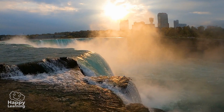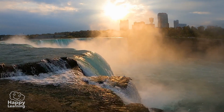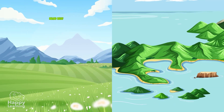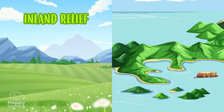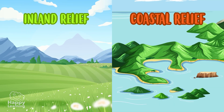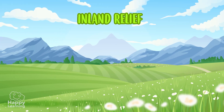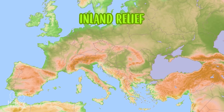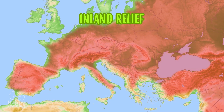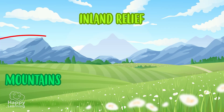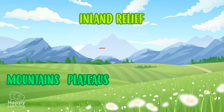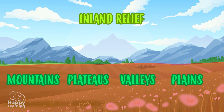The relief has many forms. And to get to know them, we are going to divide them into two groups: inland relief and coastal relief. Inland relief is that which is not in contact with the sea. Here we can find mountains, plateaus, valleys, and plains.